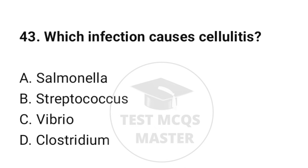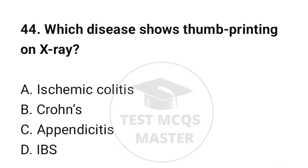Question number 43: Which infection causes cellulitis? The correct option is B: Streptococcal infection. Question number 44: Which disease shows thumb printing on X-ray? The correct option is A: Ischemic colitis.